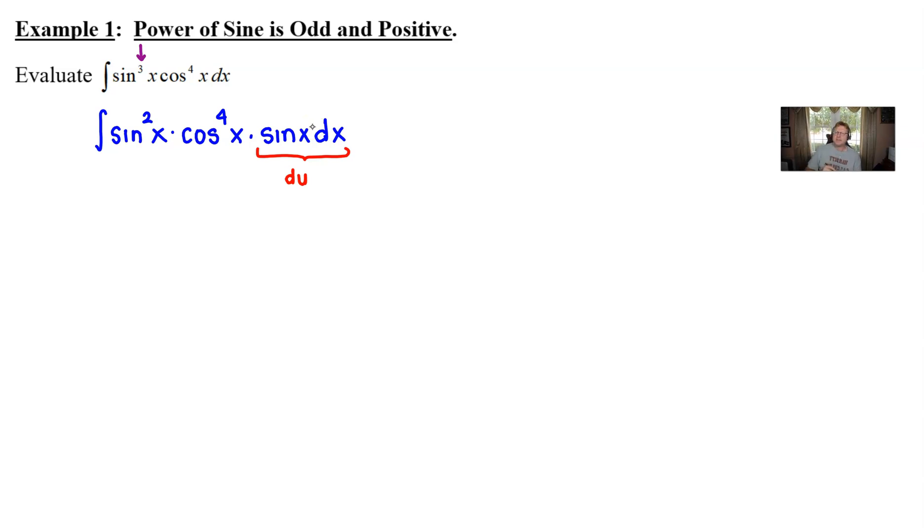Now we have something else to do before then because if you remember our terminology our little tip on the previous page said once you peel off that odd power you will want to convert all of the rest of this expression in terms of cosine and so we want that sine squared to be written as a cosine and that's not very difficult to do because we have a trig identity sine squared plus cosine squared equals one so that would mean sine squared is one minus cosine squared.